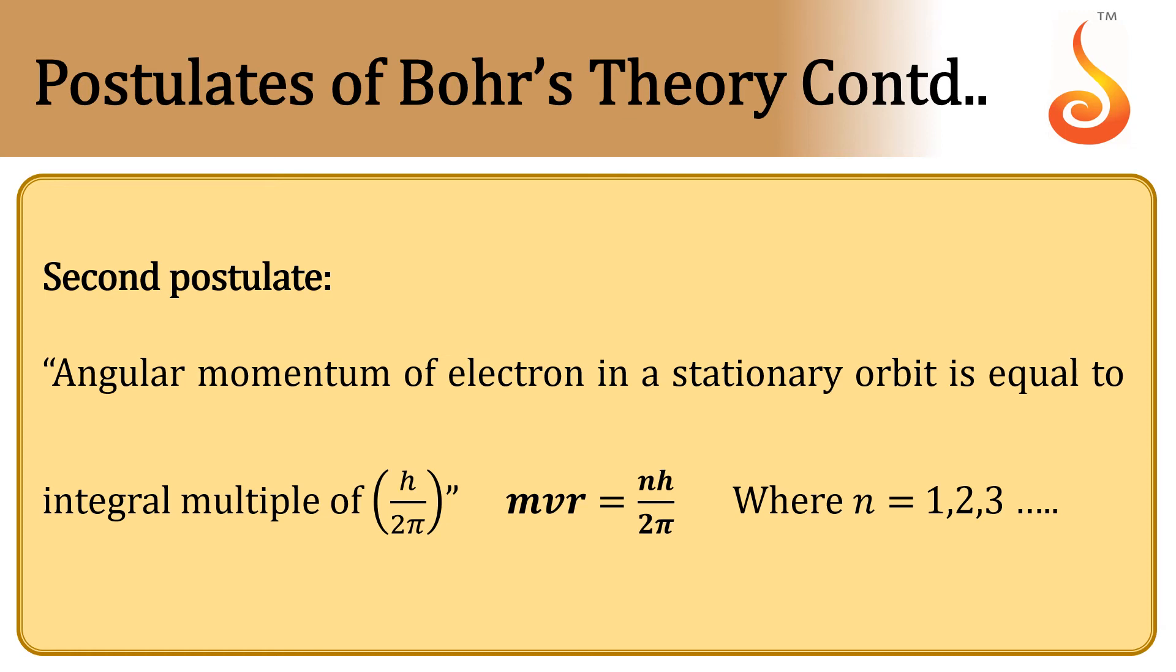Therefore, the angular momentum of an electron is always constant, with a value equal to h/2π or an integral multiple of h/2π. This is the second postulate that Bohr gave.